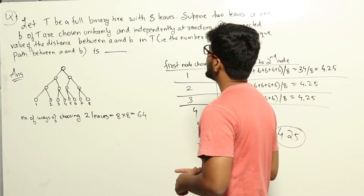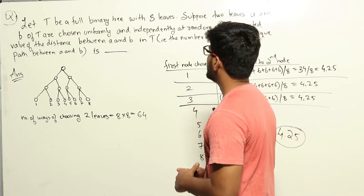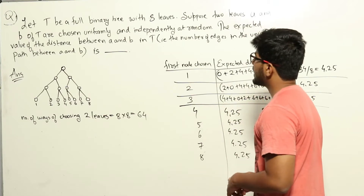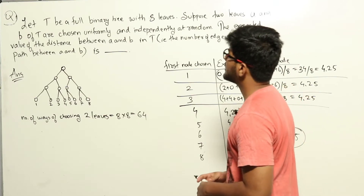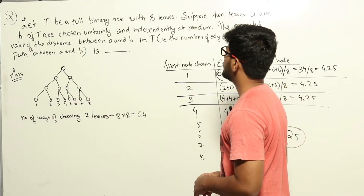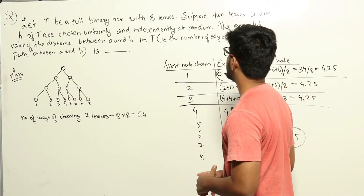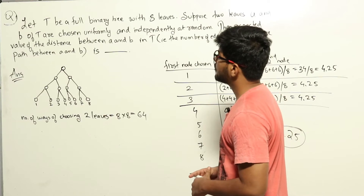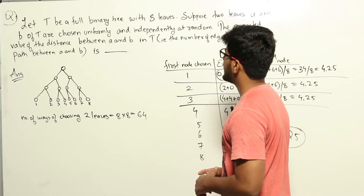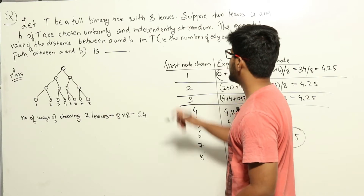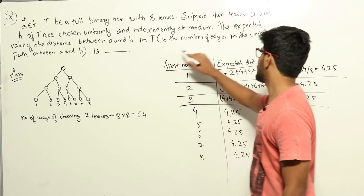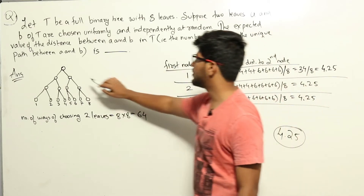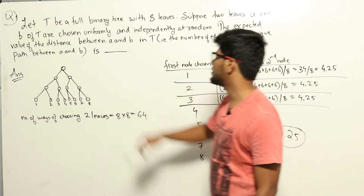Let T be a full binary tree with 8 leaves. Suppose two leaves A and B of T are chosen uniformly and independently at random. The expected value of the distance between A and B in T — i.e., the number of edges in the unique path between A and B — is what?